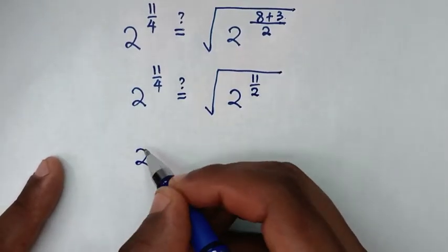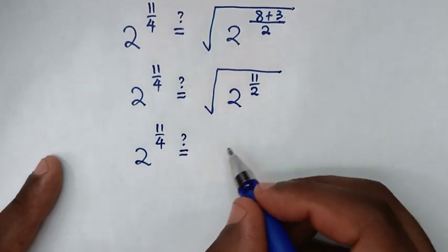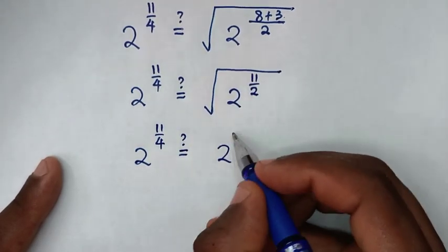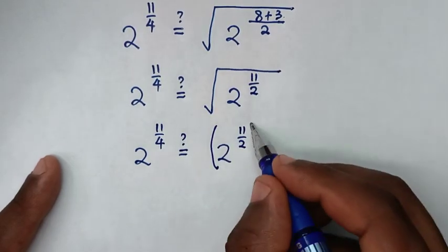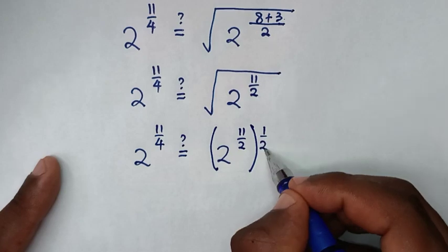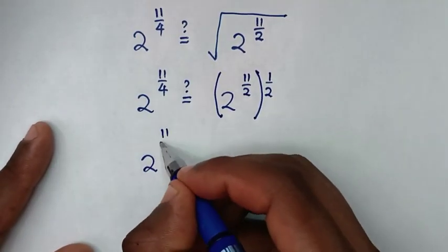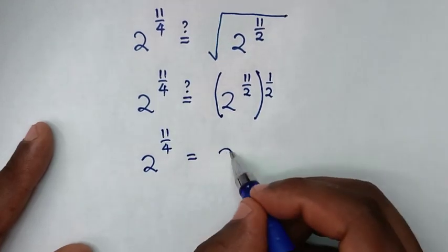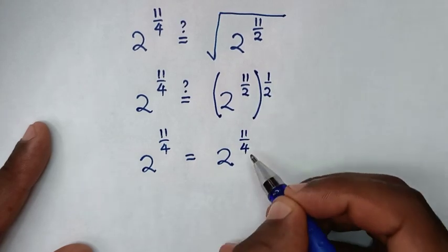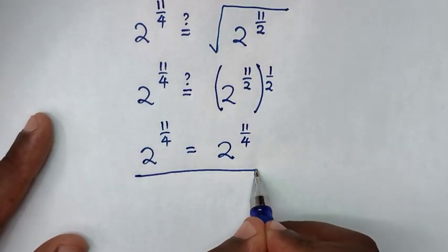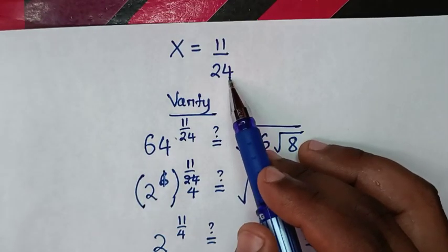The square root is the same as a power of one half. So 2 power of (11/2) times (1/2) equals 2 power of 11 over 4. The left side and right side are equal, confirming the answer is true. The value of x is 11 over 24.